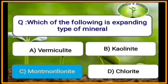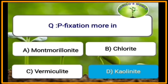Montmorillonite is an expanding type of mineral. Vermiculite is a slightly expanding type of mineral. Illite is a non-expanding type of mineral. Phosphorus fixation is more in kaolinite. Kaolinite is the most widely occurring clay mineral.